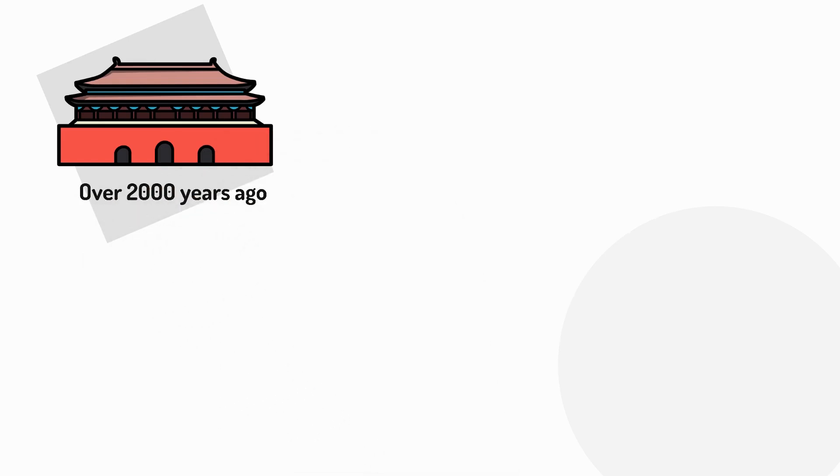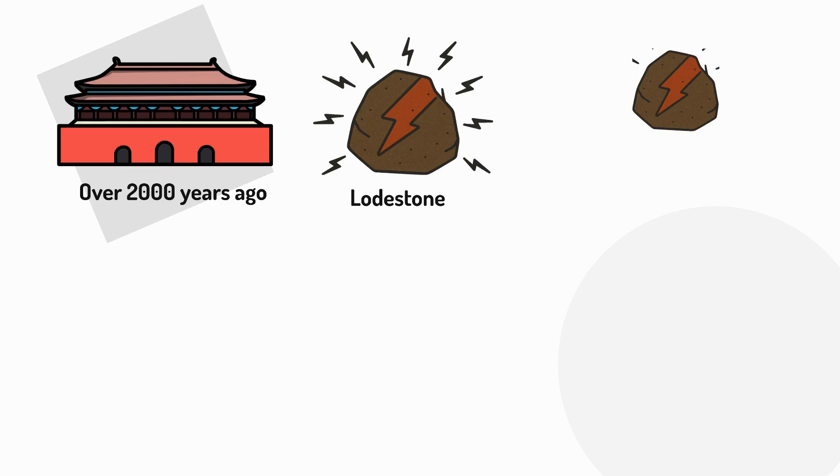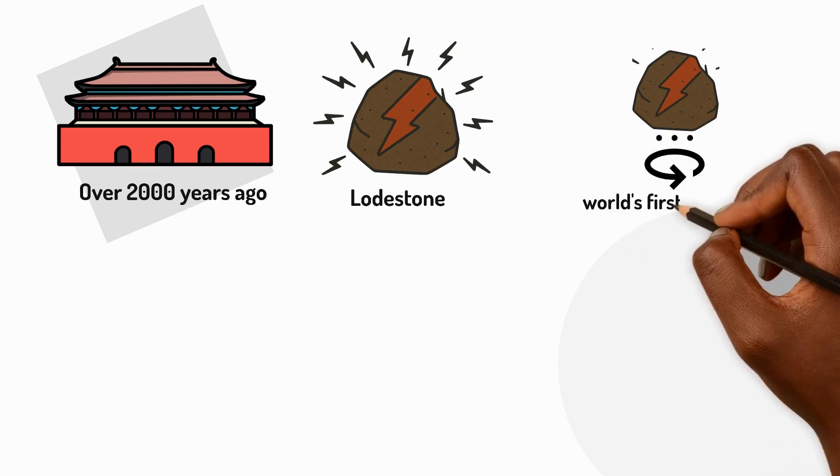Over 2000 years ago, people in ancient China discovered that a special rock called lodestone could move things without touching them. Lodestone is a naturally magnetic rock, and when it's placed on a smooth surface, it would slowly turn and point in the same direction every time. This was the world's first documented compass.